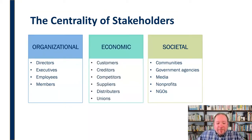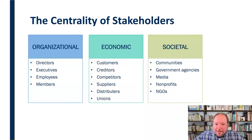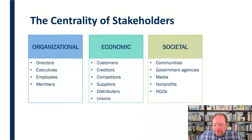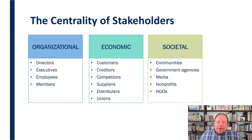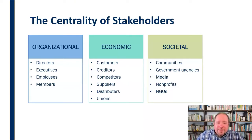Then there are economic stakeholders — our customers, creditors who depend on us to make money, competitors who are impacted by what we're doing, and our suppliers and distributors. The items coming in and going out to produce a product or provide a service, and unions if applicable, are all economic stakeholders. They have an economic stake tied to that profitability aspect of the triple bottom line.